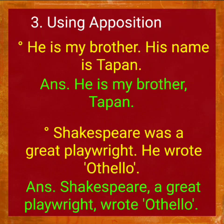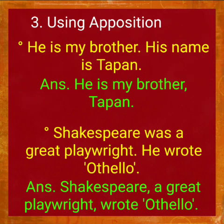Third method: using apposition — means putting two words side by side. Example: 'He is my brother. His name is Tapun.' The answer will be: 'He is my brother, Tapun.' Here, 'Tapun' and 'brother' are put side by side. This method is called apposition.